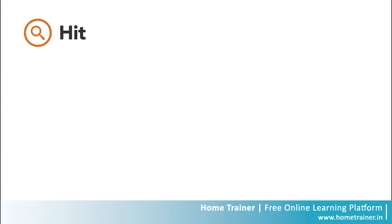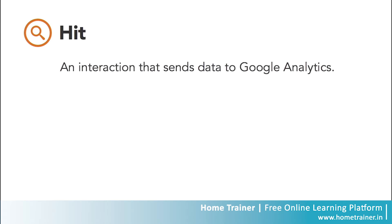You may have heard me refer to what's known as a hit, and this is an interaction that results in data being sent to Google Analytics. Common hit types include page tracking, event tracking, and e-commerce tracking. Each time the tracking code is triggered by a user, that data is packaged into a hit and sent to Google's servers.